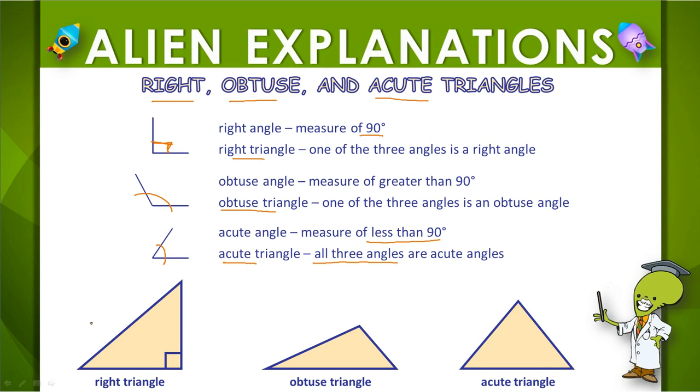Look at the pictures at the bottom. You can see the first one is of a right triangle, and you can see the right angle. The second one has this obtuse angle, and it's an obtuse triangle. And this last one has three acute angles, and it's an acute triangle.